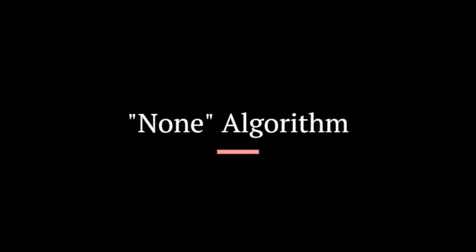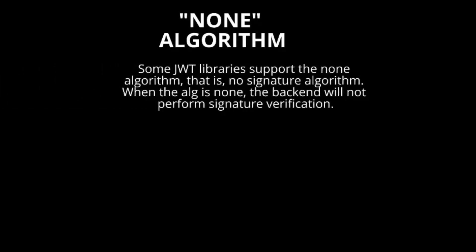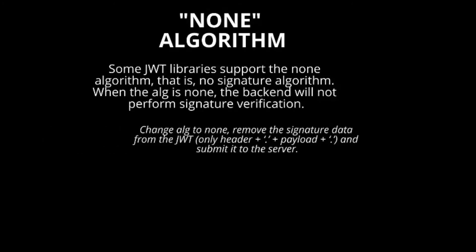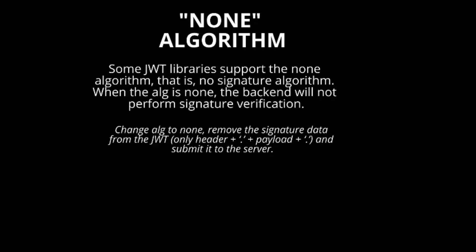None Algorithm: some JWT libraries support the none algorithm, meaning no signature algorithm. When the alg is set to none, the backend will not perform signature verification. To exploit this, change the alg to none and remove the signature data from the JWT, then submit it to the server.